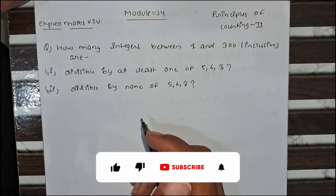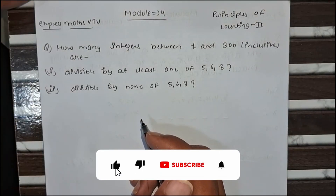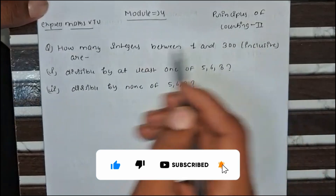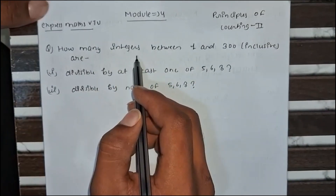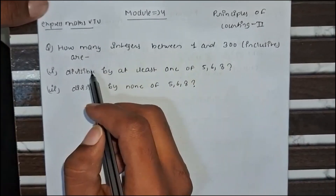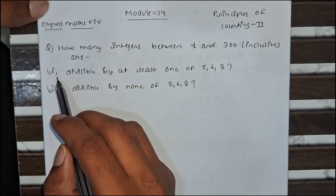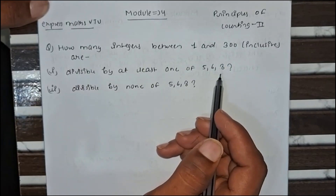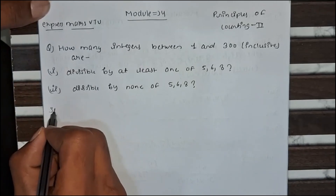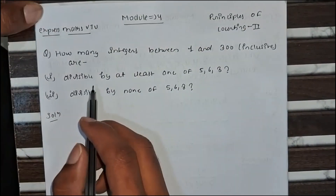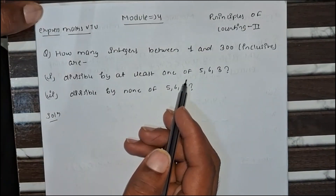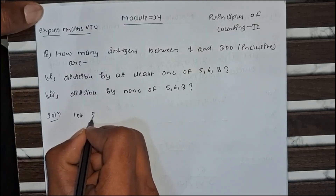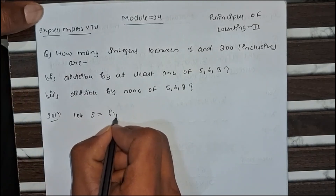Hello everyone, today we are going to solve another important problem from module 4: Principle of Mathematical Counting. The question is: how many integers between 1 and 300 are divisible by at least one of 5, 6, or 8? So we are solving for the first part: divisible by at least one of 5, 6, 8.